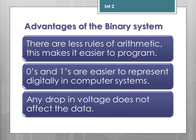There are advantages to the binary system, although it can be more confusing for humans. There are less rules of arithmetic, which leads to less complex programming and less memory overheads, making processors easier to actually implement and program. 0s and 1s are easier to represent digitally in computer systems. Electric charges are either there or they are not, and they can also use magnetic fields.